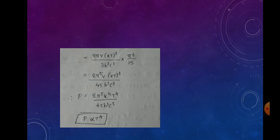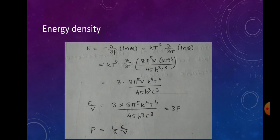Using the standard value π⁴/15, we reduce the expression to 2π⁵ V (kT)⁴ / (45 ℏ³ c³), which gives the final result proportional to π⁵ k⁴ T⁴ / (45 ℏ³ c³).